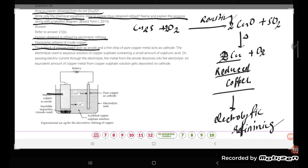This thick block is the anode, and a thin strip of pure copper metal acts as a cathode. This thin metal is acting as the cathode.